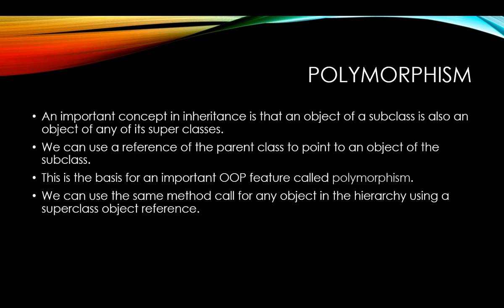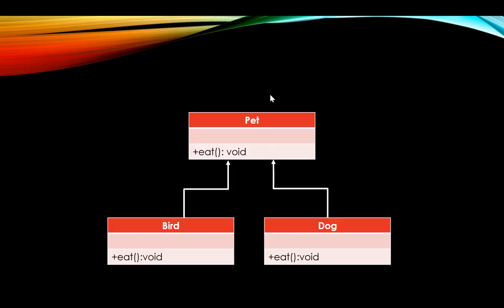We can use the same method call for any object in the hierarchy using the superclass object reference. Let's look at a simple example. We have a Pet class as the parent class, it has a public method eat which is a void method. We have a Dog class inheriting from Pet and overriding the eat method, and we have a Bird class also inheriting from Pet and overriding the public eat method.